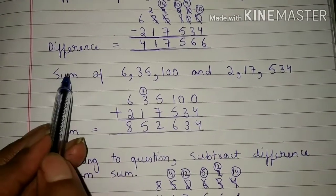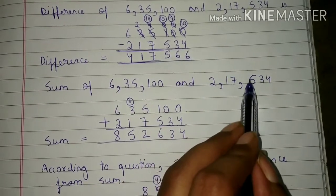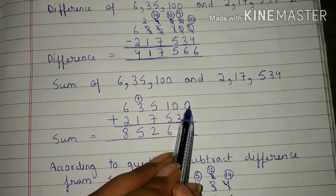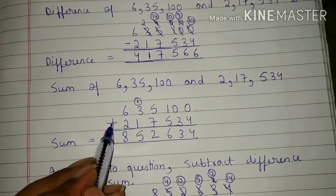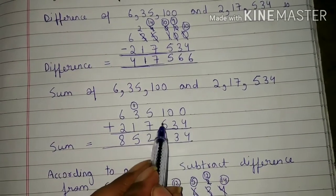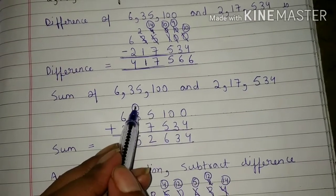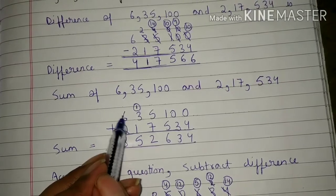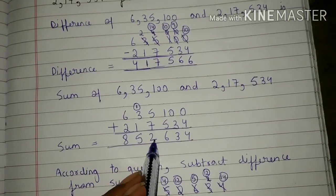Now we will find the sum of 6,35,100 and 2,17,534. So we will write 6,35,100 here and after that we will write 2,17,534 here. Now we will add the numbers. 0 plus 4 is 4. 1 plus 3 is 4. 1 plus 5 is 6 with 1 carried. 3 plus 1 is 4 and 4 plus 1 is 5. 6 plus 2 is 8. The sum is 8,52,634.